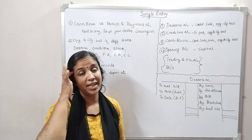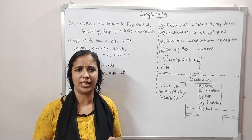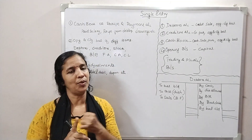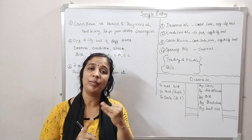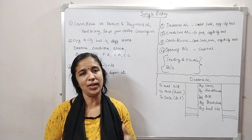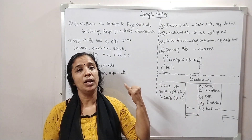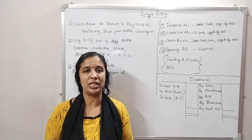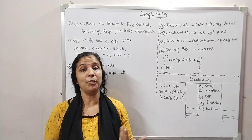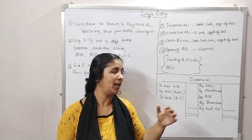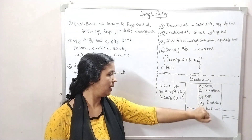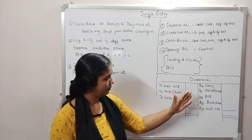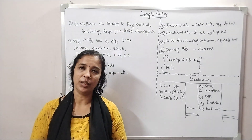Now we will discuss the debtors account. There are many items in the debtors account: closing amounts of cash, cash received from debtors, discount received from debtors, bills receivable received, bad debts written off, and bills dishonoured. The debtors account also shows sales balance and balance carried down.